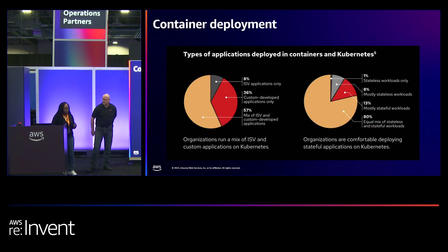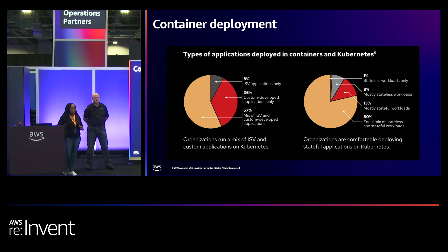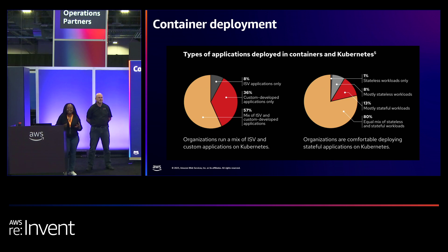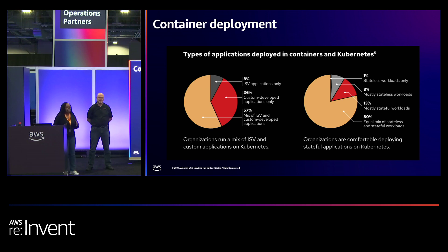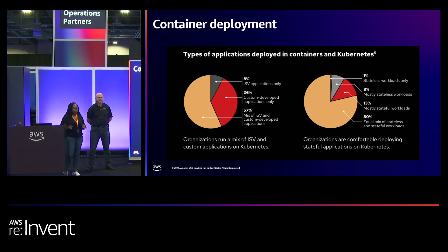Kubernetes workloads are a mix of ISV commercial off-the-shelf as well as custom-developed applications. OpenShift is used for many of these types of workloads. At Amazon Web Services, you can run containers on EKS or ECS using an EC2 launch type, or you can leverage serverless with AWS Fargate. We use ECS or EKS for orchestration.